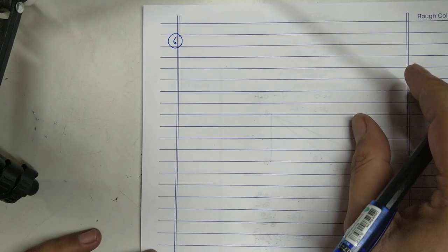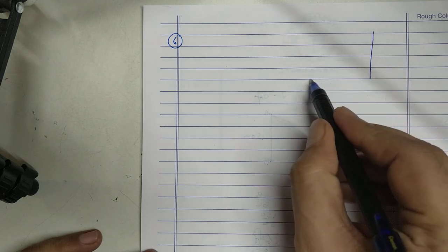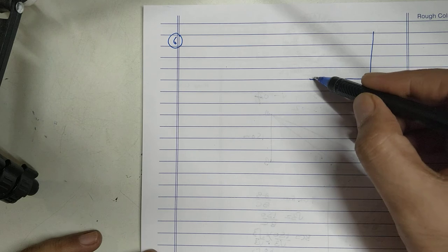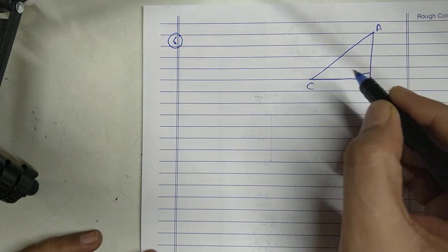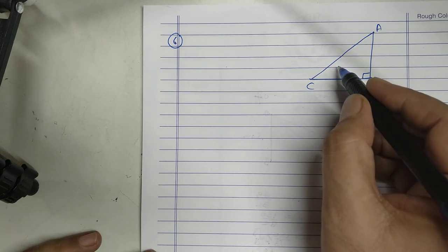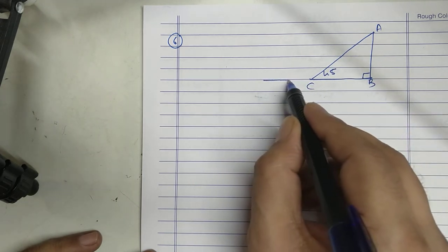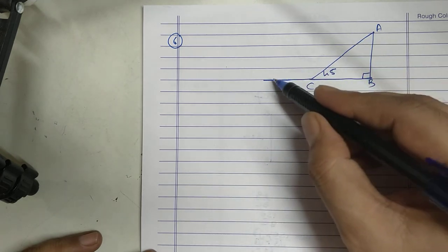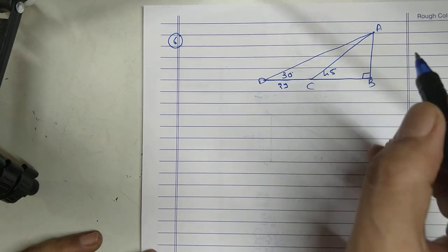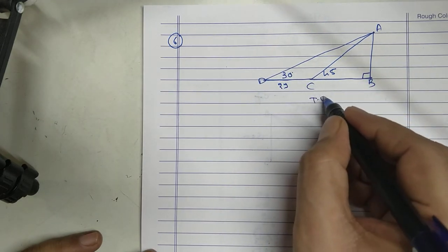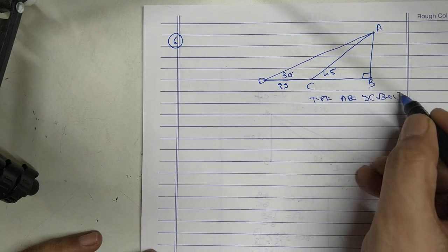Sum Number 6. This is the tower. Shadow was still here. Angle was 45. When shadow increased by 2i meter, angle changes to 30.